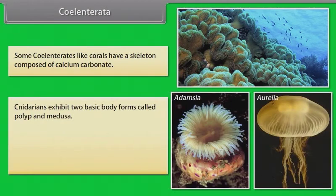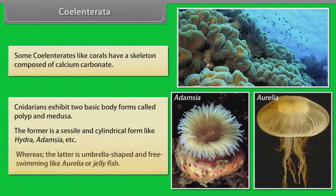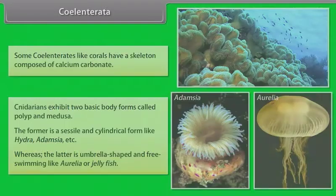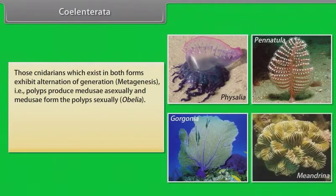Cniderians exhibit two basic body forms called polyp and medusa. The former is a sessile and cylindrical form like Hydra, Adamsia, etc. The latter is umbrella-shaped and free-swimming like Aurelia or jellyfish. Those Cniderians which exist in both forms exhibit alternation of generation — metagenesis — that is, polyps produce medusae asexually and medusae form the polyps sexually.